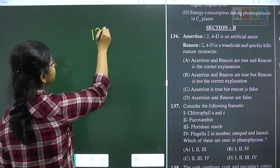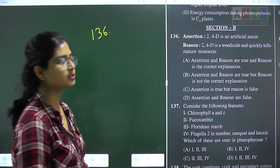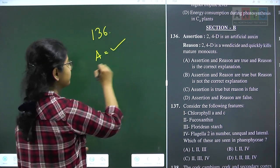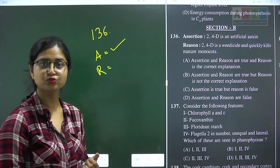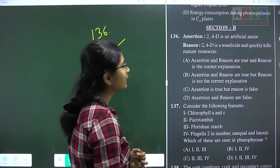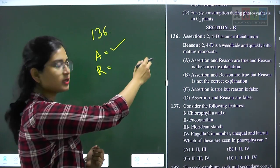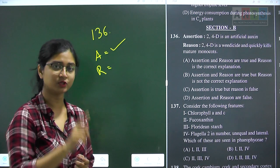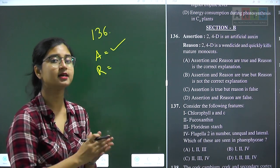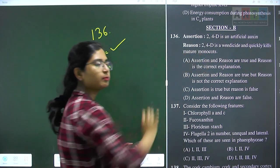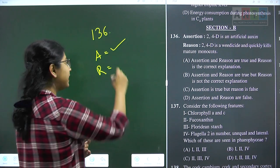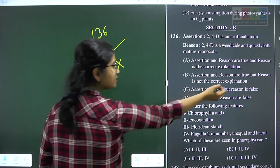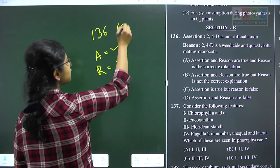Now starting section B. Question 136 is assertion-reason based. Assertion: 2,4-D is an artificial auxin — true. Reason: 2,4-D is a herbicide and quickly kills mature monocots — partially incorrect. 2,4-D is indeed a herbicide but it is a selective herbicide targeting broad-leaved dicots, not monocots. This part of the reason is incorrect, making the entire reason false. Assertion is true but reason is false. Question 136 answer is option C.